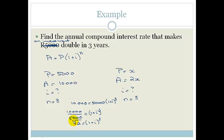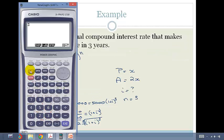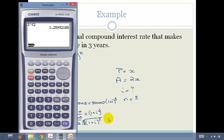So we get out our calculator, go shift, cube root of 2, and we get 1.26. So therefore 1.26 equals 1 plus i. Therefore our i is 0.26, which is 26%.